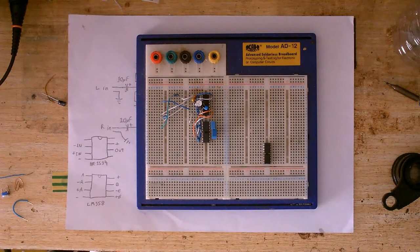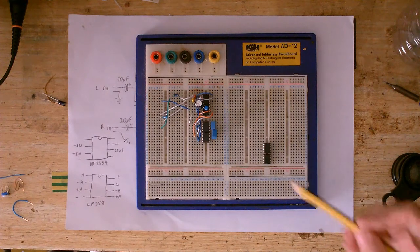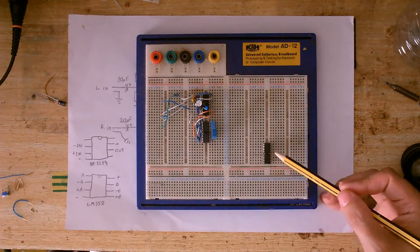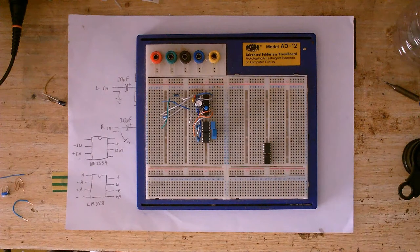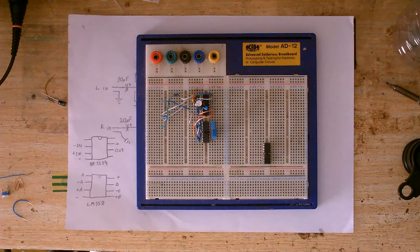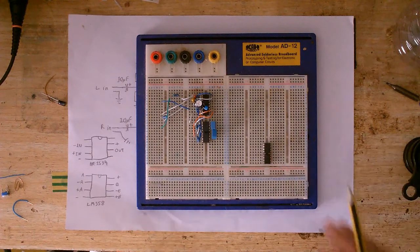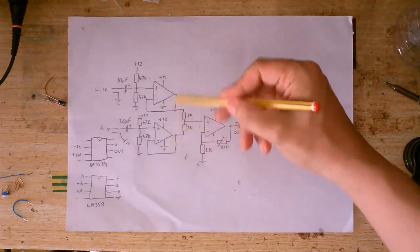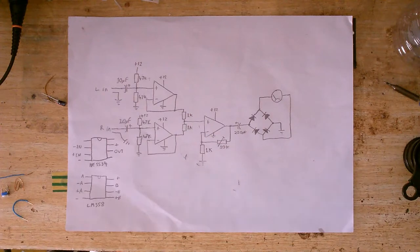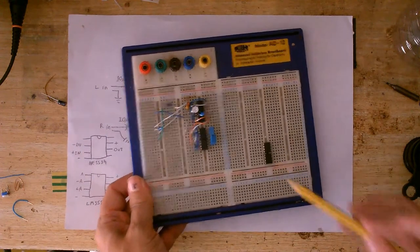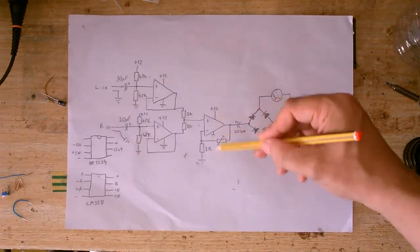So the chips I've decided to use for this project are the LM358 and the NE5534. The reason why I'm using these two chips, well, this one is a dual op-amp, so that's going to do this part of the circuit. And the LM358 is going to be this op-amp.